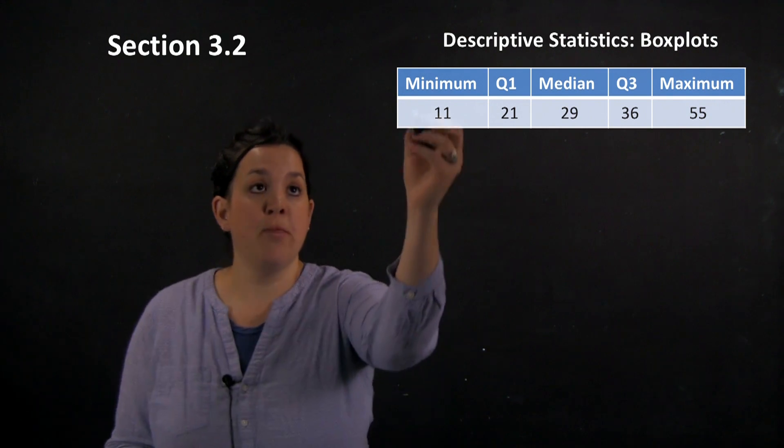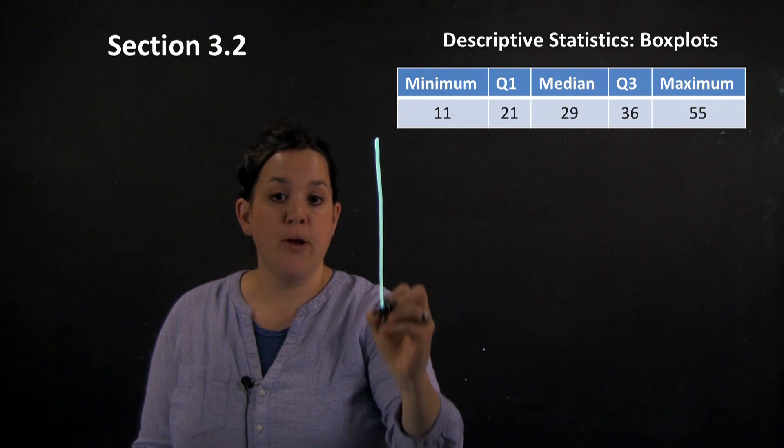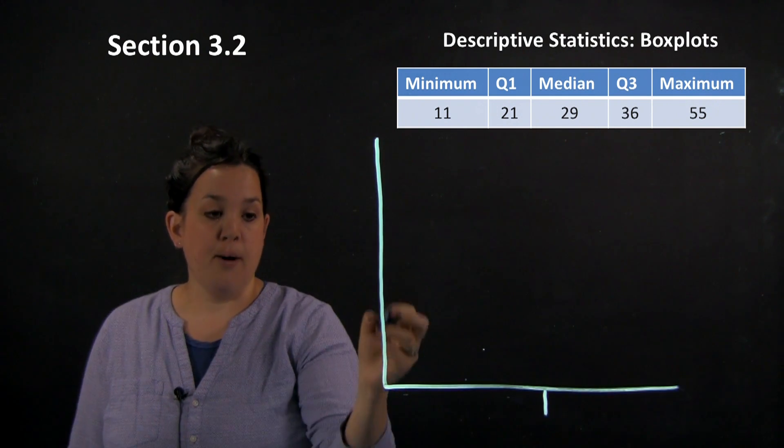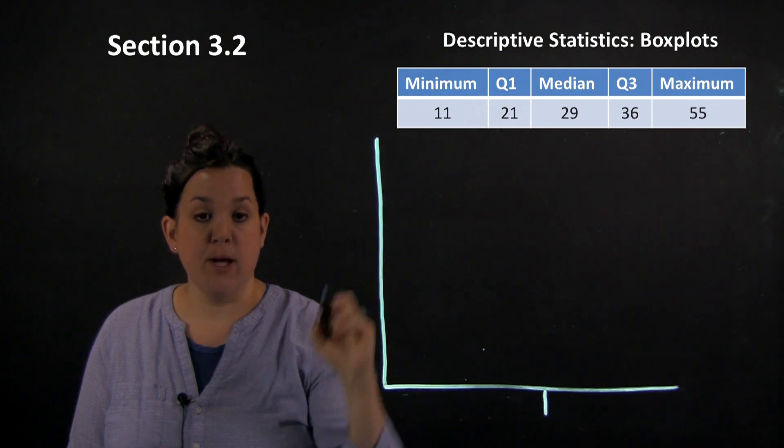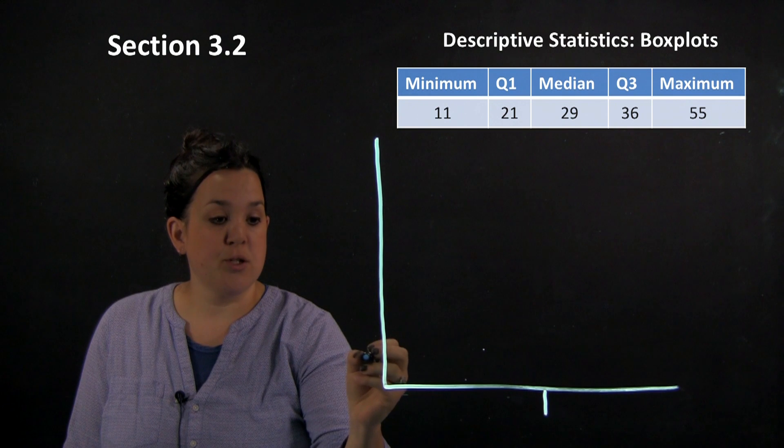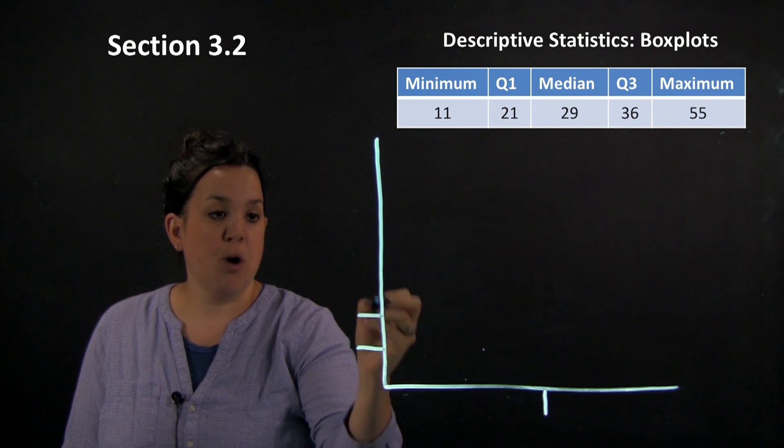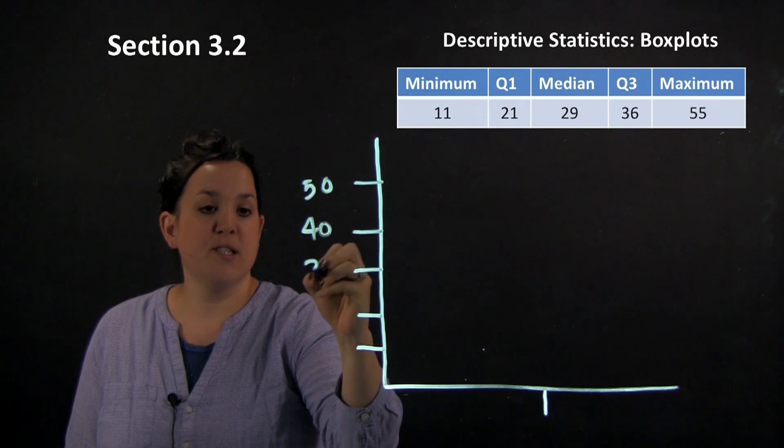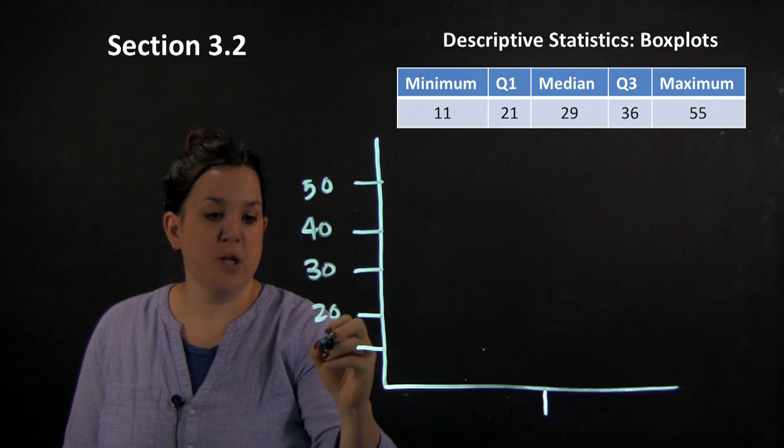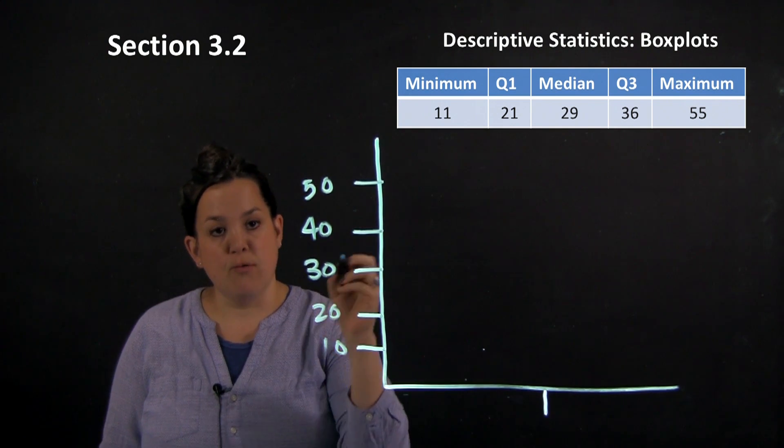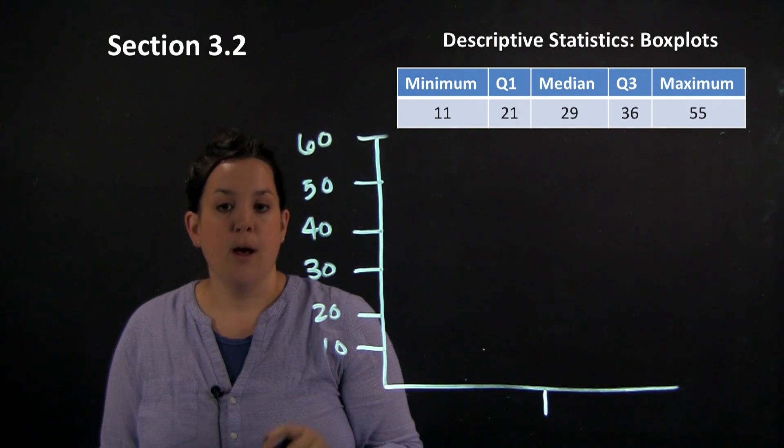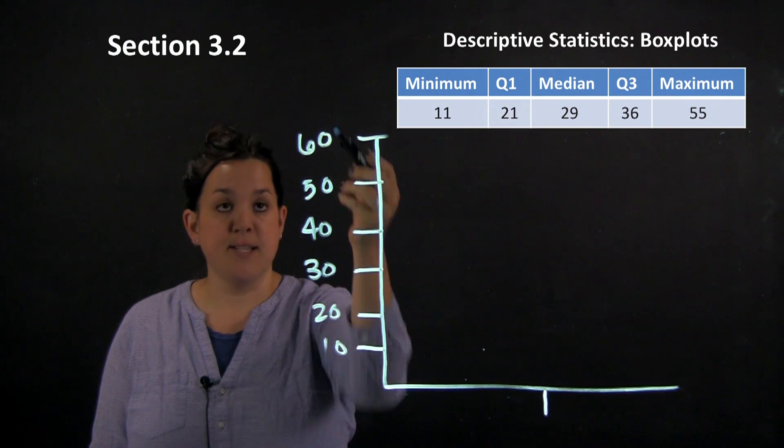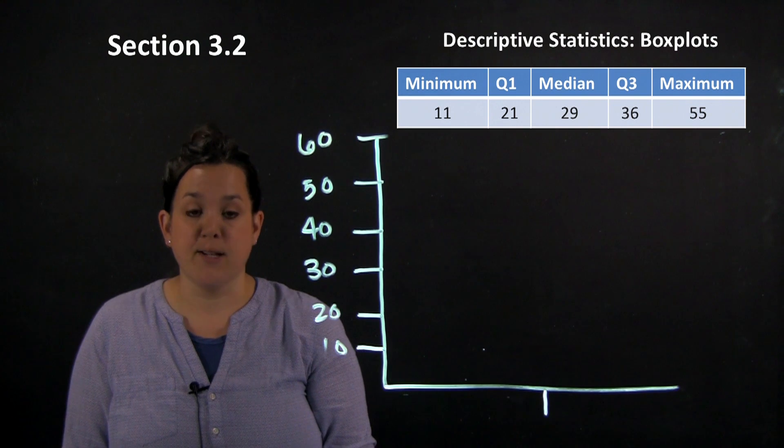So with a box plot one thing that happens is you're going to on your y-axis or the vertical axis give yourself a scale that's appropriate given the data. So here I'm going to jump by 10. So 10, 20, 30, 40, 50. So you would have an even spread between all of your ticks or hash marks. Actually we need to go up to 60. So you're doing that based on what your data is. So here we're going from 11 to 55. So 10 to 60 is an appropriate scale for your y-axis or the vertical axis.